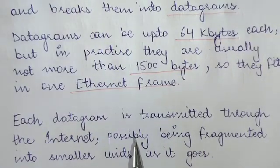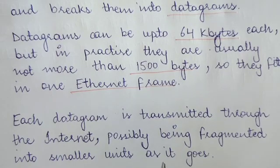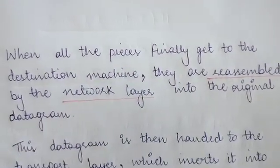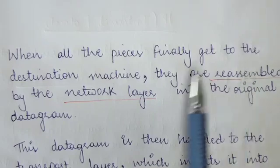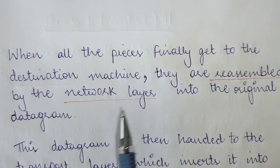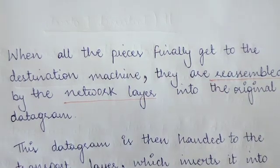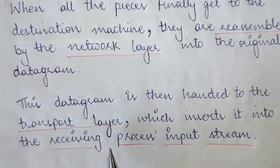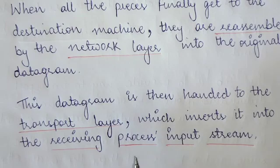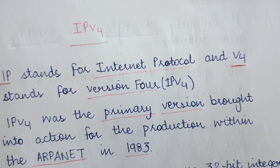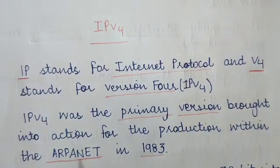Each datagram is then transmitted through the internet, possibly being fragmented into smaller units as it goes. When all the pieces of data finally get to the destination machine, they are reassembled by the network layer into their original datagram form. This datagram is then handed to the transport layer, which inserts it into the receiving process's input stream.